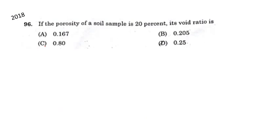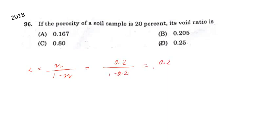Next question: if the porosity of the soil sample is 20%, its void ratio is. Using the formula e = n / (1 − n), where n = 0.2: e = 0.2 / (1 − 0.2) = 0.2 / 0.8 = 0.25. So the answer is option D, that is 0.25.